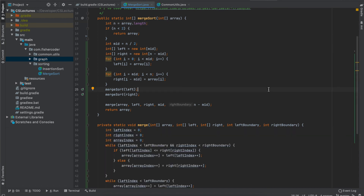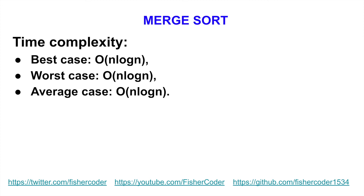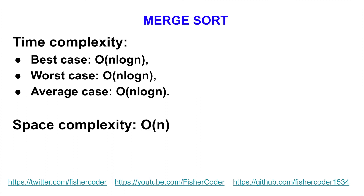Now let's talk about time and space complexity. Time complexity for all three cases — best case, worst case, and average case — it's always going to be O(n log n) for merge sort. That's why merge sort is pretty stable and the performance is very predictable, because we always divide the entire input array into two until we can compare individualized items and then eventually merge. This merge function takes O(n) time because the two sorted subarrays are already sorted, so we simply compare front elements. Space complexity: we always need O(n) extra space since we always create temporary arrays in every recursive call.